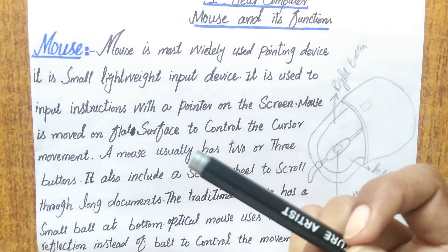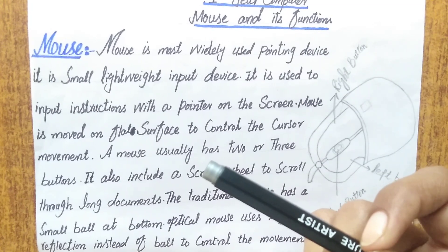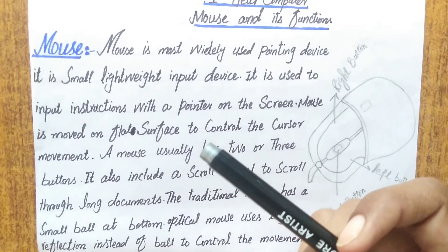The pointer is moved on a flat surface to control the cursor movement.